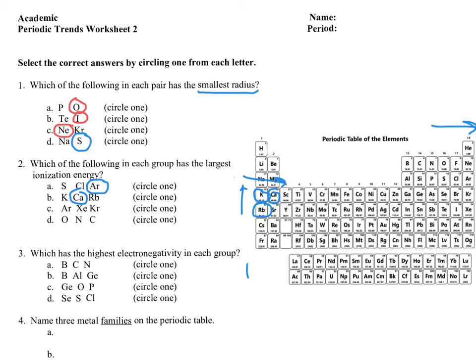Looking at argon, xenon, and krypton: as we go up the periodic table, atom size gets smaller. Therefore the smaller the atom, the harder it is to pull off an electron, requiring more energy. So argon ends up having the highest ionization energy.